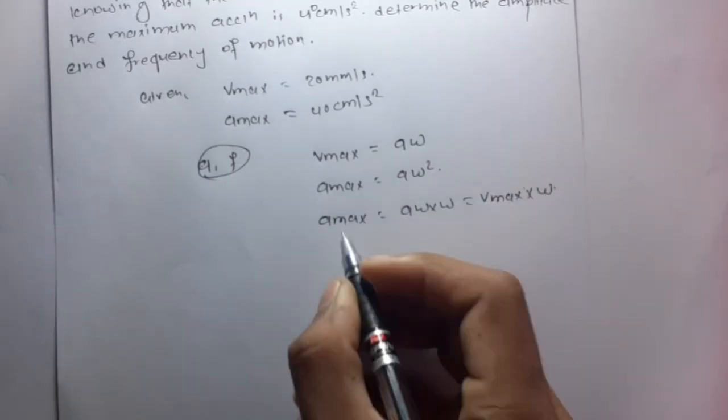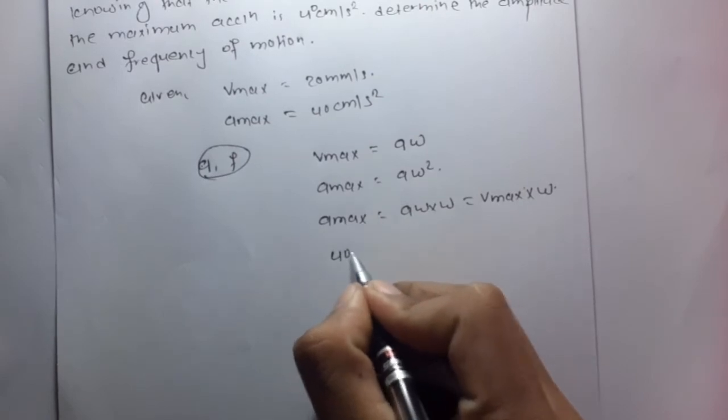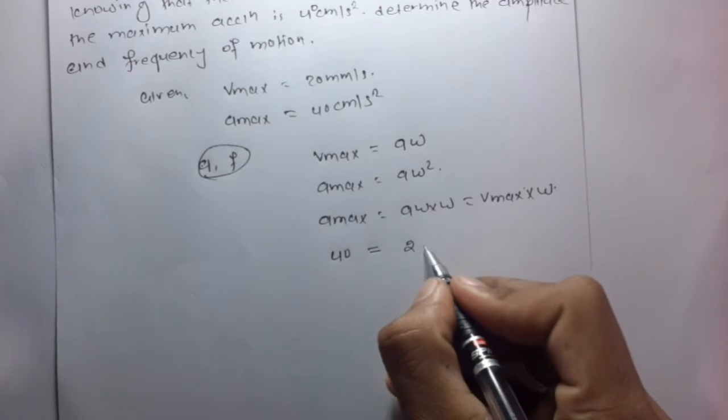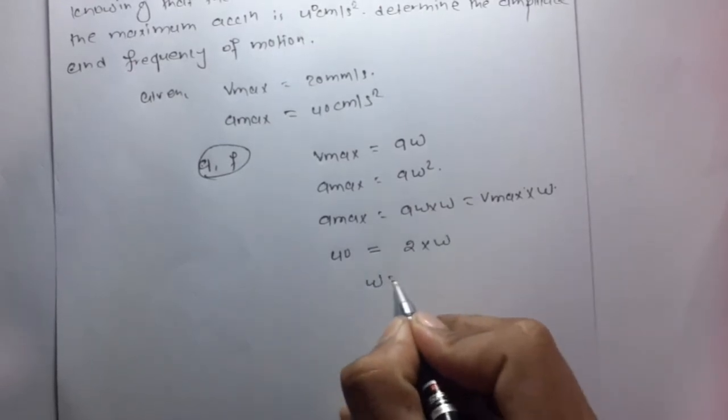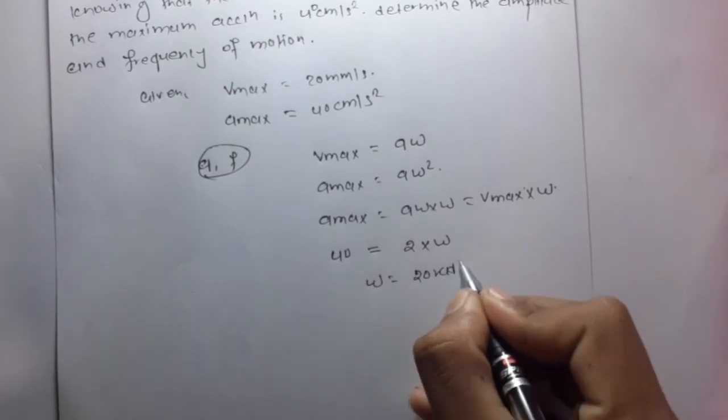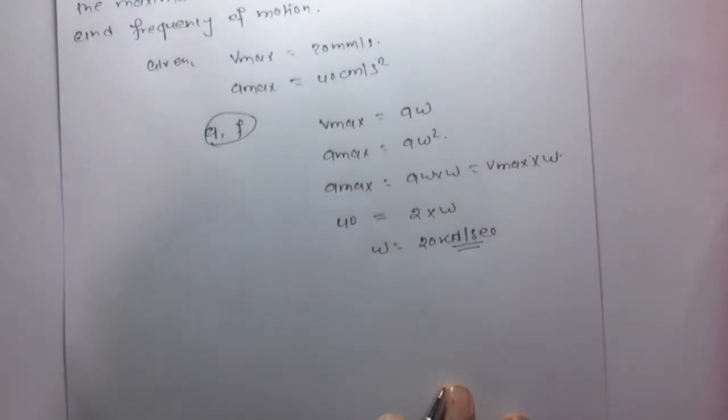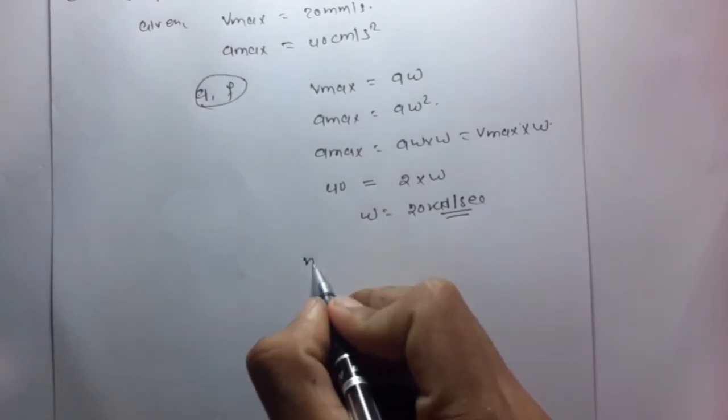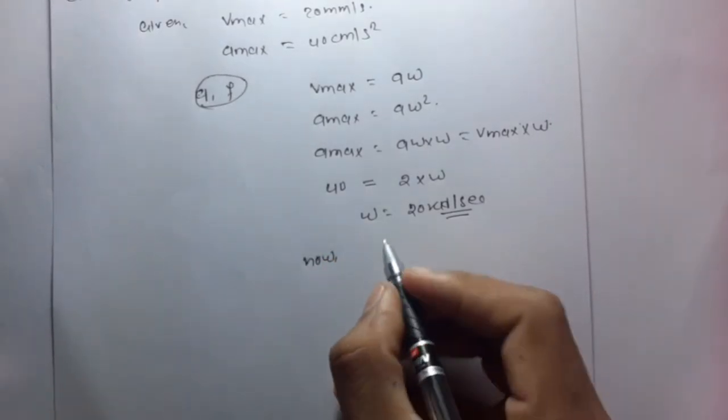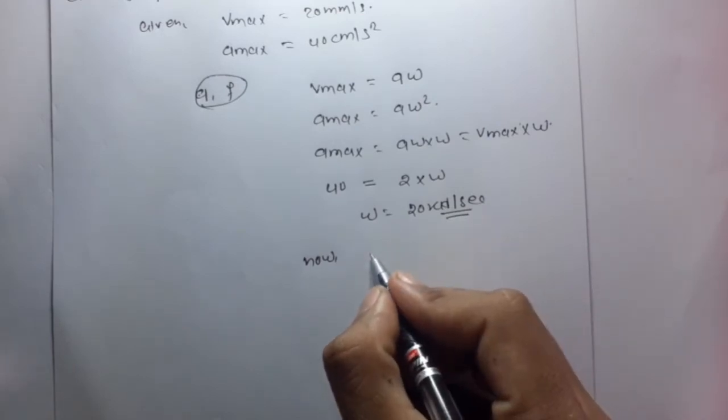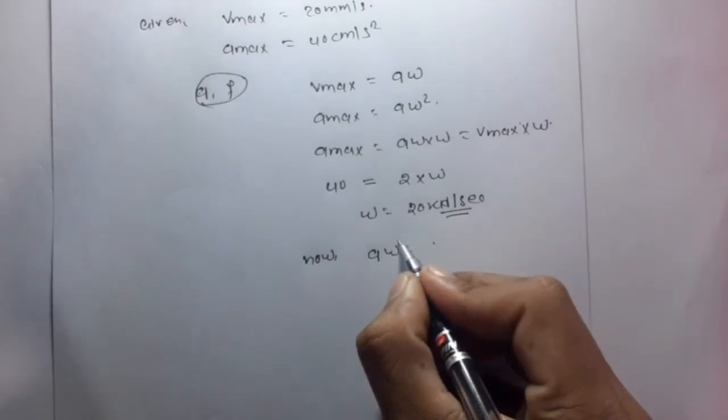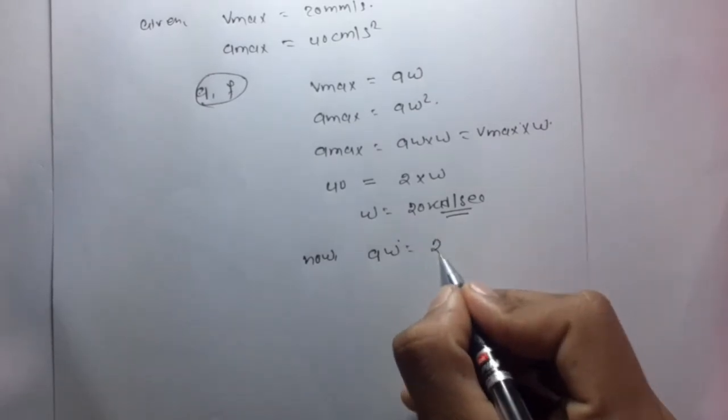So amax = 40 equals Vmax times omega. Vmax is 2 cm/s times omega, so omega equals 20 rad per second. Now we have to find the amplitude. A omega equals 2, so A equals 2 divided by 20.